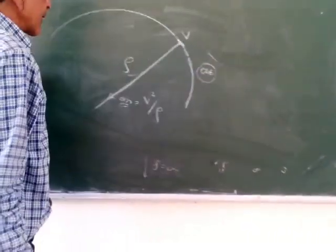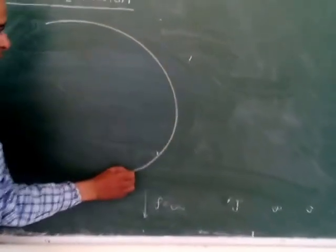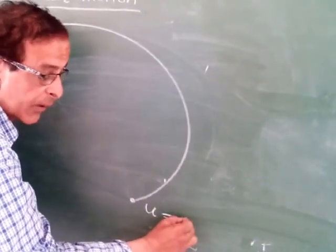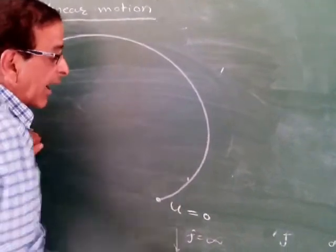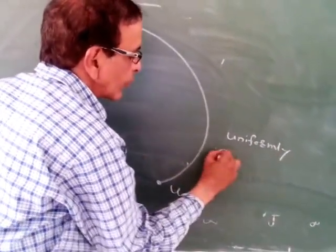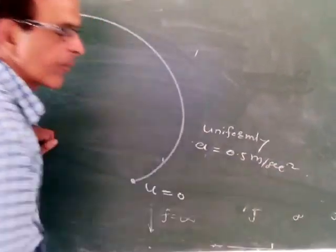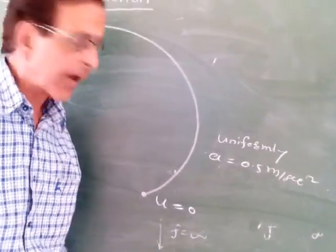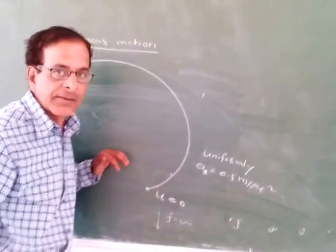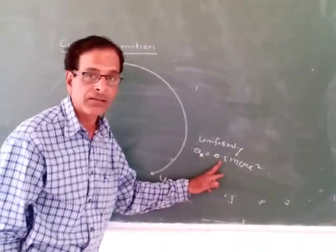Now we will consider an example. Suppose a particle is moving along a curved path. The particle starts from rest and accelerates uniformly with a tangential acceleration of 0.5 meters per second squared. This acceleration is uniform and constant along the curve path.